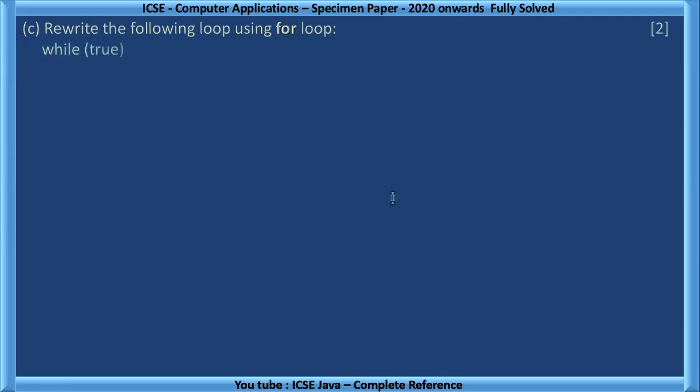Rewrite the following loop using for loop. While true, it prints star. While true means it is always true. The condition becomes always true. How we can convert into for loop? Always true means it is an unbreakable one, that is infinity loop. We can create an infinity loop where there is no initialization, no condition and no increment. So it becomes an infinity loop, and we are going to print a star.